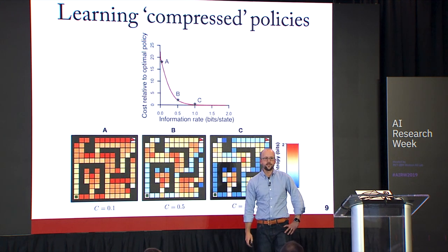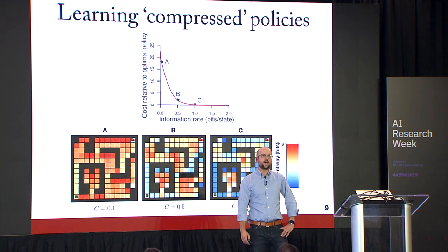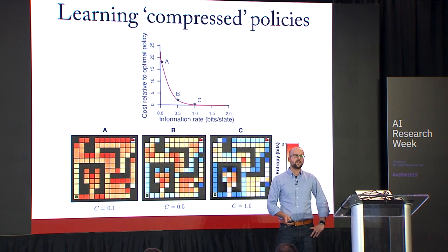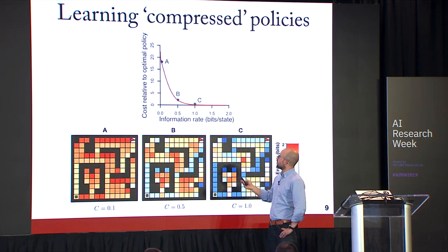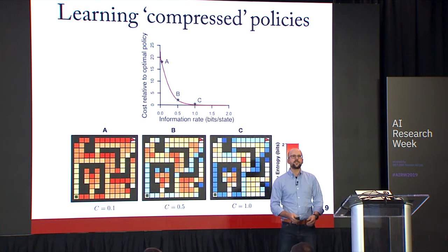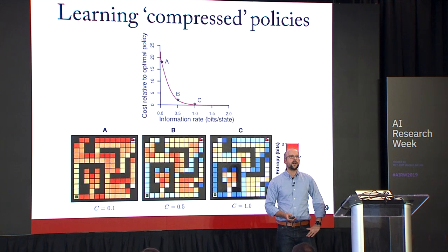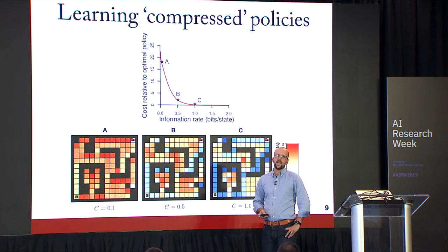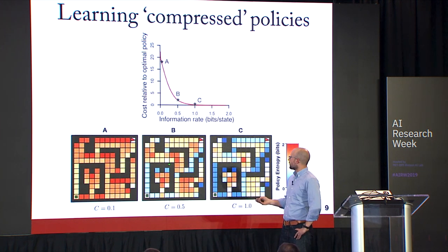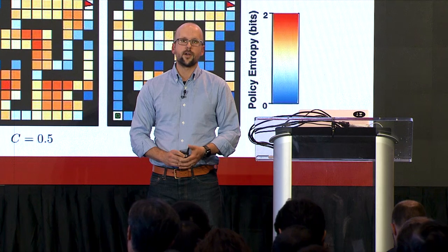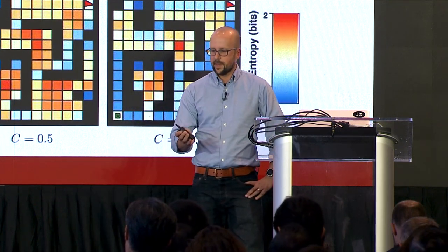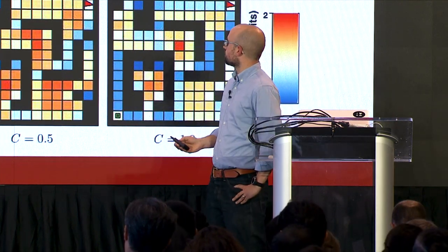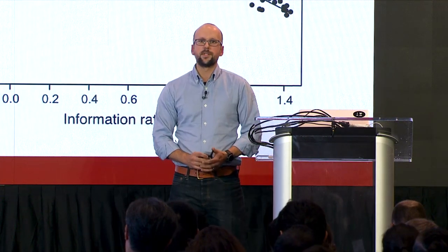Taking three points along this optimal trade-off and plotting the policy: color indicates randomness — red is essentially behaving randomly, darker cooler colors are more deterministic. At very low information rates, the agent can't represent a detailed policy and just wanders around randomly. But at intermediate stages, it becomes a resource allocation problem — the agent learns detailed policies in states where it really matters, like corridors where one wrong turn costs a lot. In regions where any action doesn't cost much, it doesn't need a detailed policy.